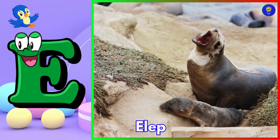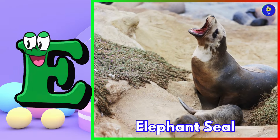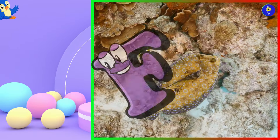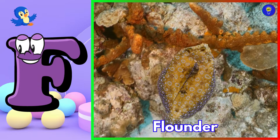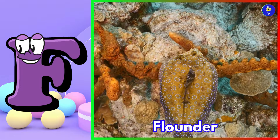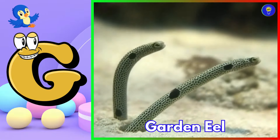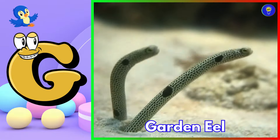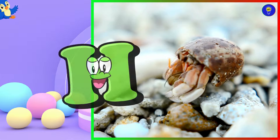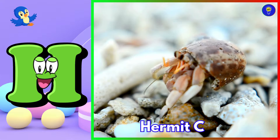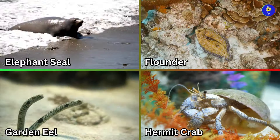E is for elephant seal. Eh, elephant seal. F is for flounder. Fuh, flounder. G is for garden eel. Guh, garden eel. H is for hermit crab. Ha, hermit crab.